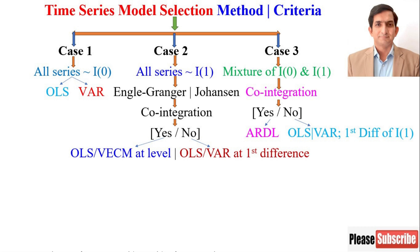Case number two: if all the series are integrated of the same order I(1), meaning that a non-stationary series becomes stationary at first difference, then you apply Johansen cointegration to investigate the long-term relationship, and apply the error correction model to see the short-term dynamics of the relationship between variables.